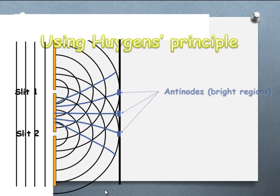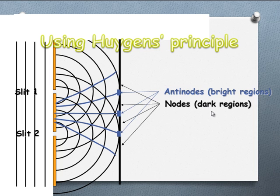We call these bright bands antinodes. The dark regions in between are called nodes. You'll need to make a note of those names in your memory bank, because they'll likely be asking about nodes and antinodes at some point in your exam.